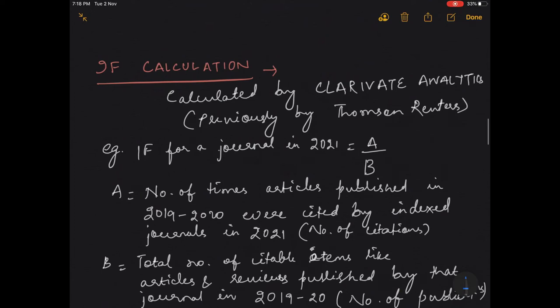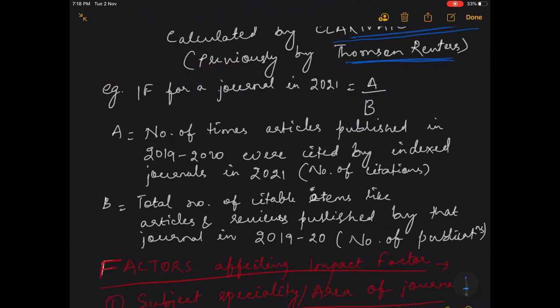Now how do we calculate the impact factor? Impact factor was previously calculated by Thomson Reuters but now it is being calculated by Clarivate Analytics. Coming to an example of the calculation, impact factor of a journal in 2021 will be equal to A by B, where A is equal to the number of times articles published in 2019 to 20 were cited by indexed journals in 2021. That is, in short, we can say A is the number of citations.